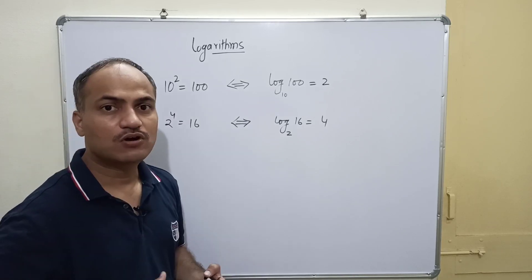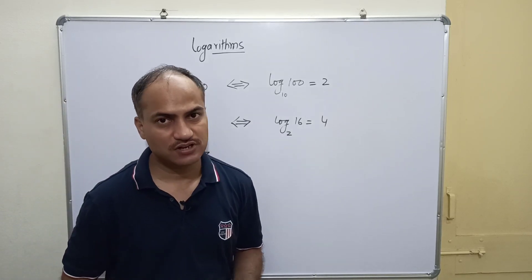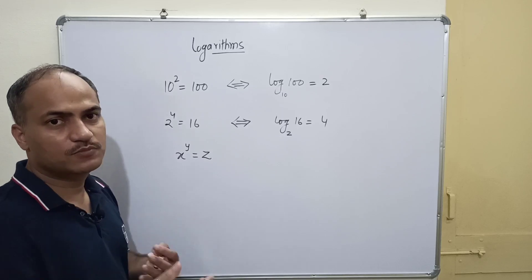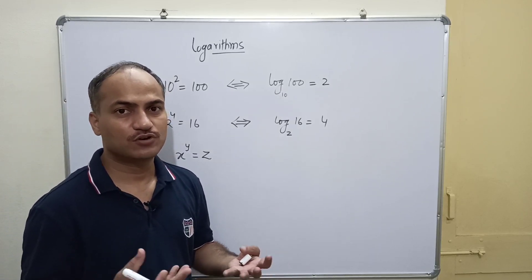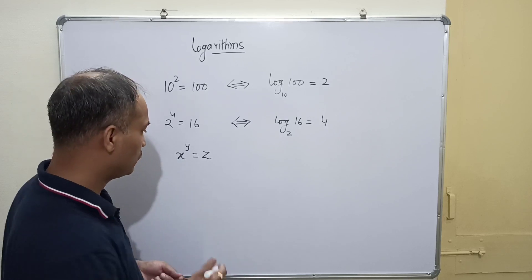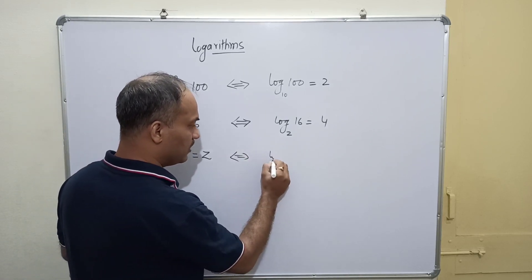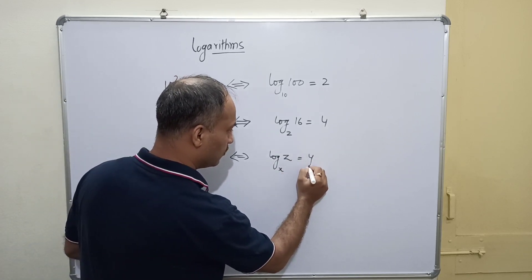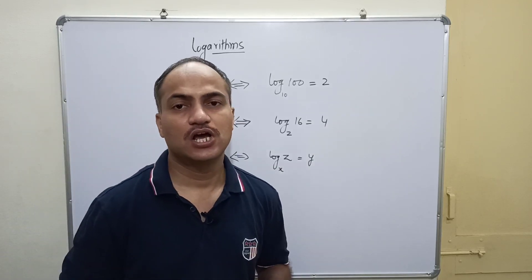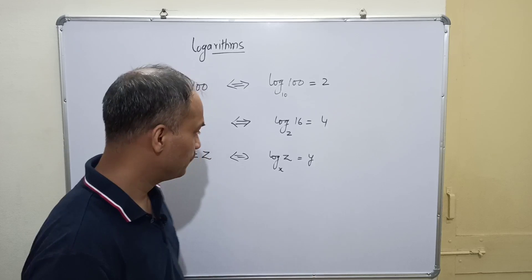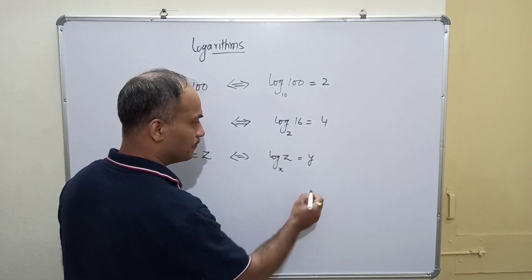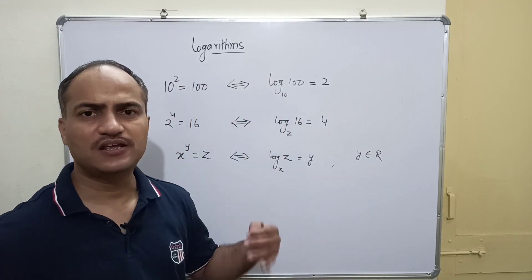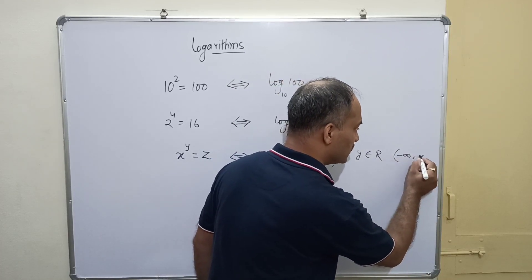Now let us look at the general case. Suppose we have three quantities x, y, and z such that x to the power y equals z. This can be written as log base x of z equals y. There are constraints on these variables: the value y can be any real number, from minus infinity to plus infinity.